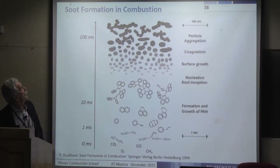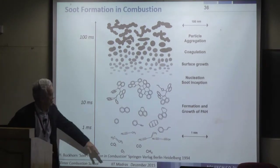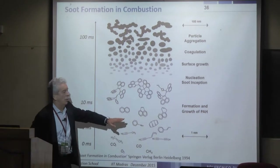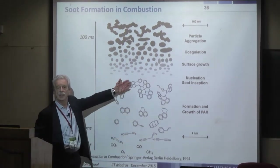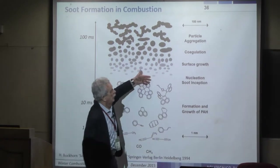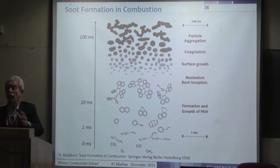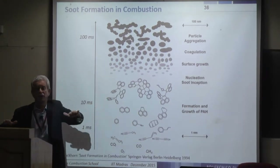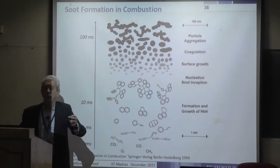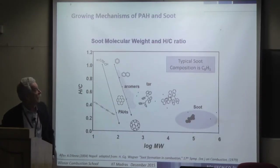Soot formation proceeds from methane to acetylene compounds, to the first aromatic ring, and then grows to soot inception at a molecular weight around 3,000. After inception, the first particle forms and continues to grow.